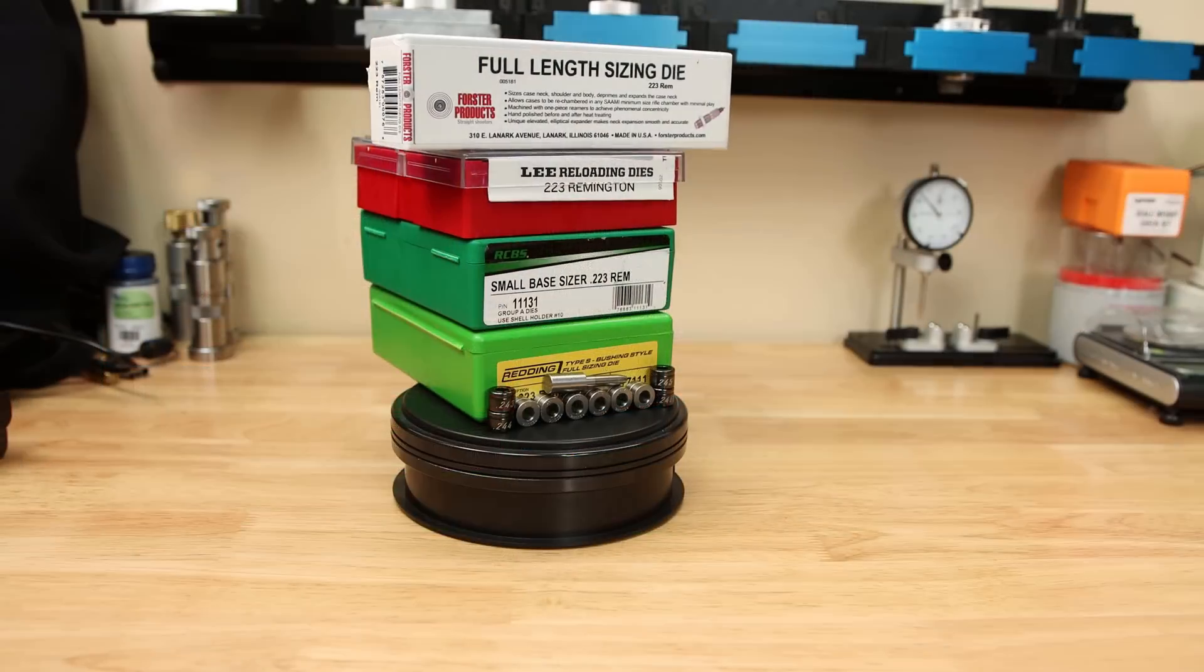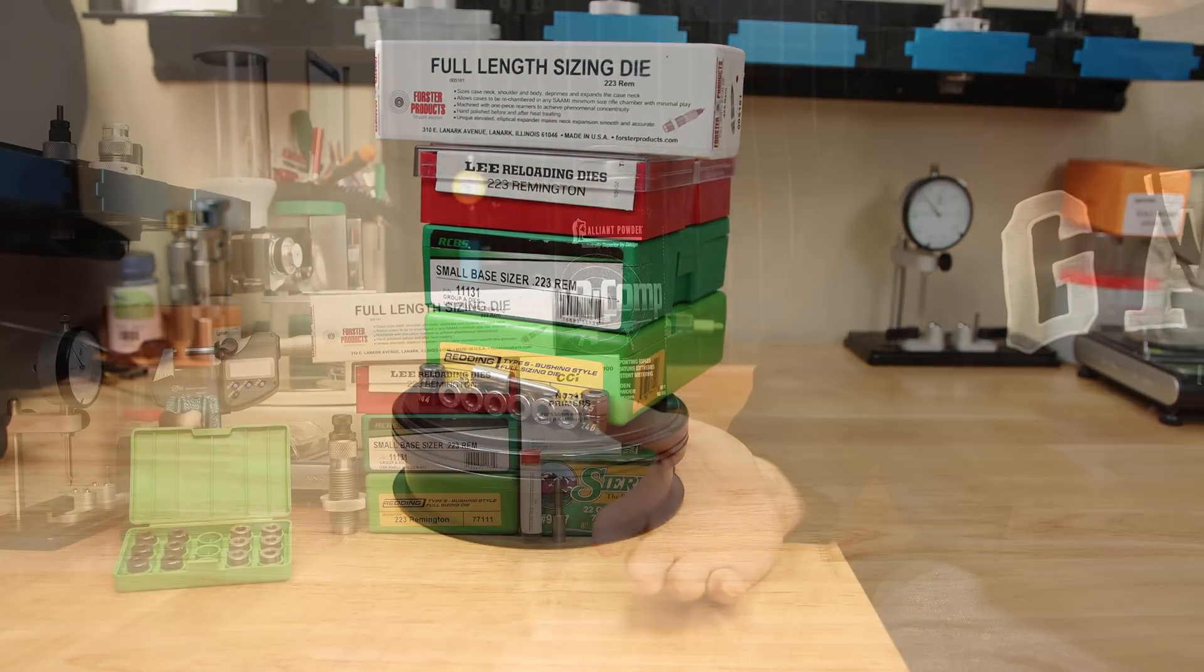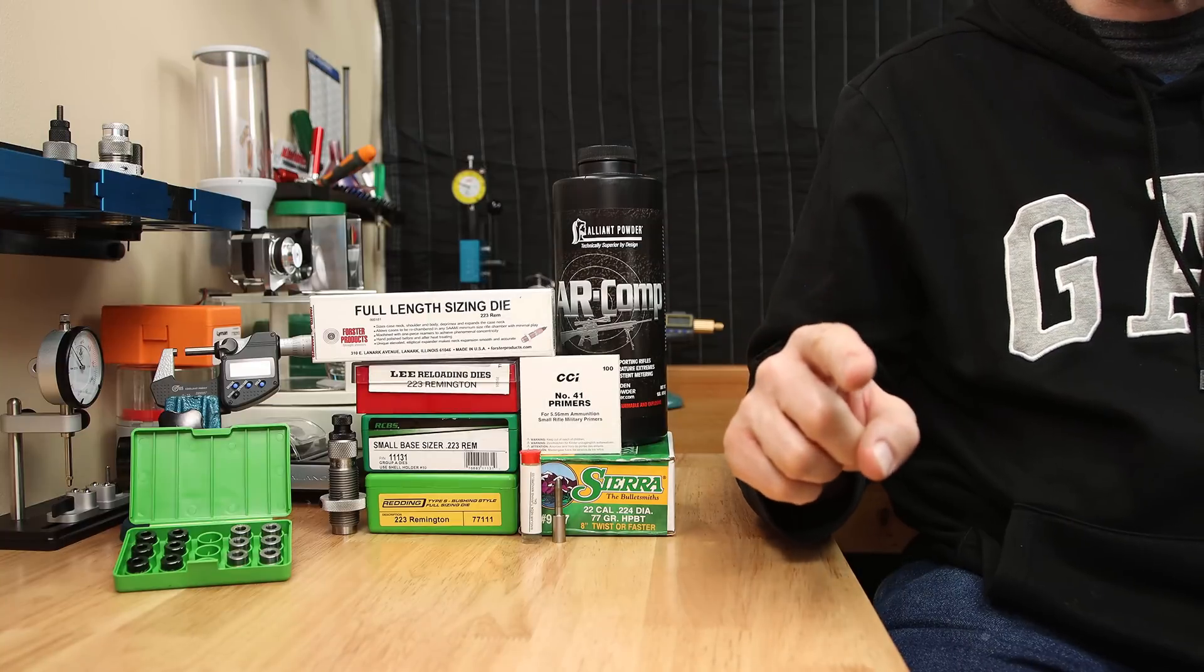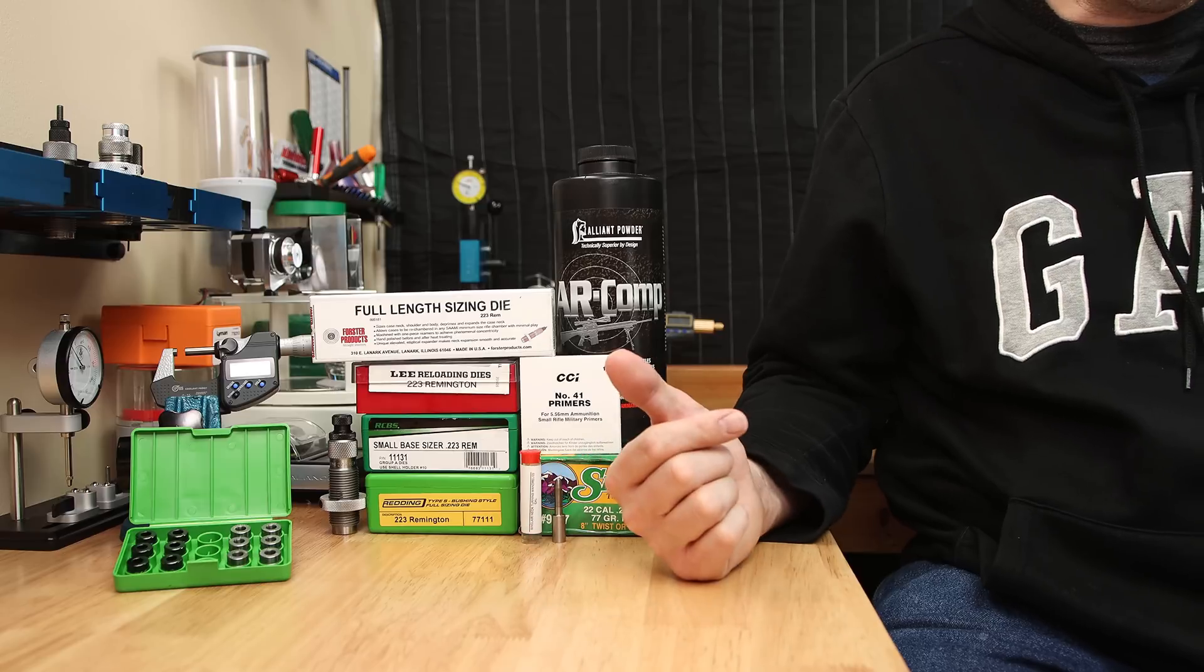Is there a universal best method for sizing brass or setting neck tension in .223 Remington? What makes it the best? Would you switch out your sizing dies if you thought the groups you fired would be smaller or the extreme spreads would be lower for the life of your die? I know I would.